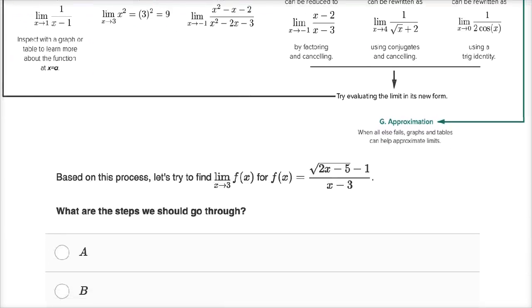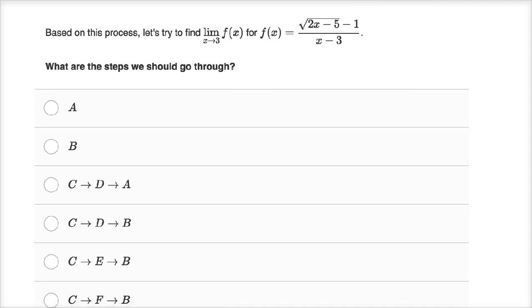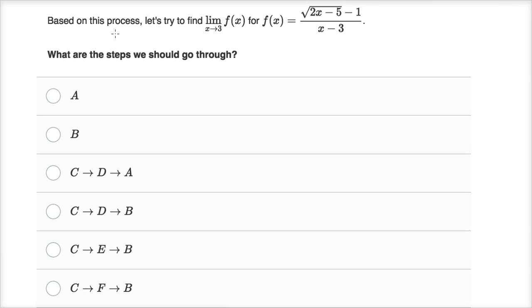So the first question, they say, based on the process in the flowchart, let's try to find the limit as x approaches three of f of x for f of x is equal to this business. What are the steps that we should go through?